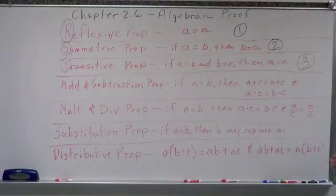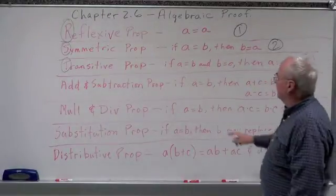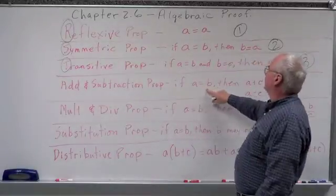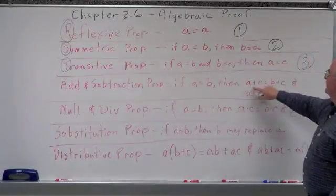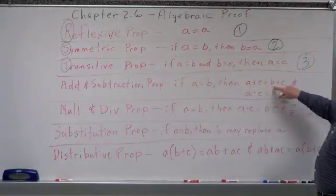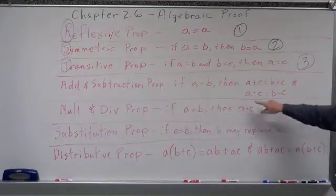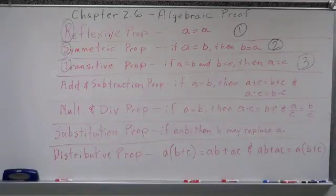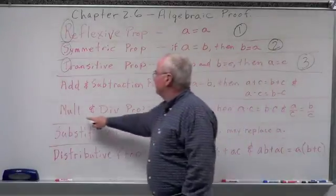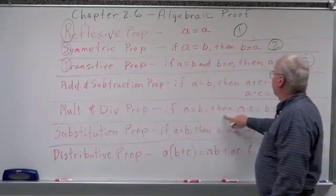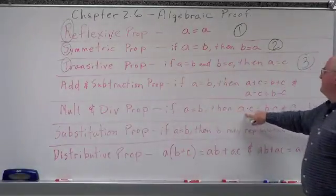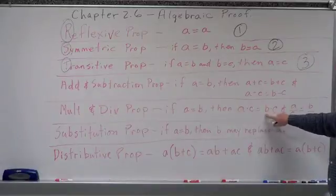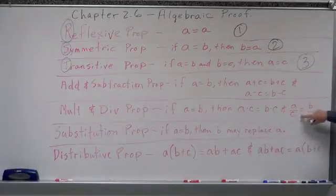Other properties — very simple. Addition and subtraction property: if A equals B, then A plus C equals B plus C, and A minus C equals B minus C. Multiplication and division property — the same thing: if A equals B, then A times C equals B times C, and A divided by C equals B divided by C.